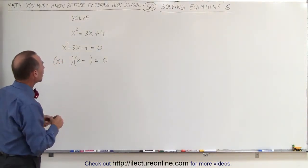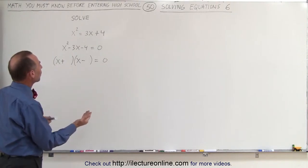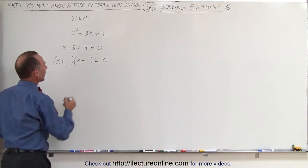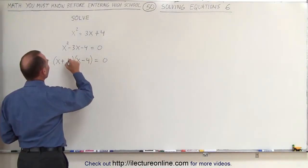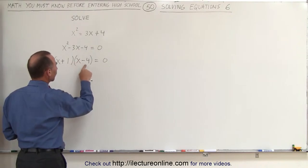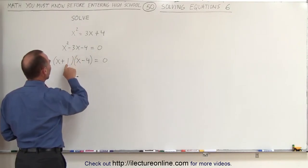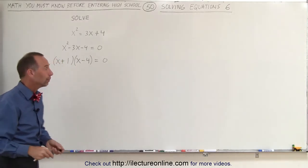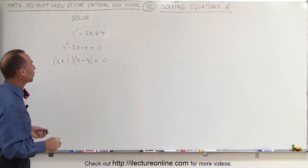Now, we're looking for two numbers. When we multiply, we get negative 4. When we add, we get a negative 3. How about this? How about a negative 4 and a positive 1? If we add those two together, plus 1 minus 4 gives us negative 3. We multiply a 1 times a minus 4 gives us a negative 4. So it is factorable, which makes it easy to solve the equation.